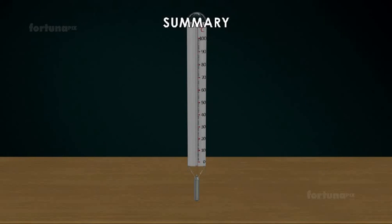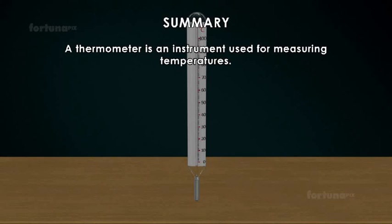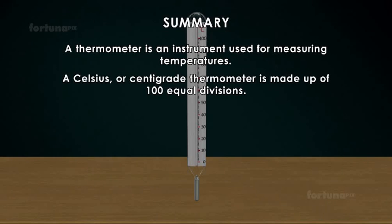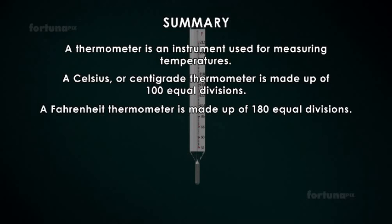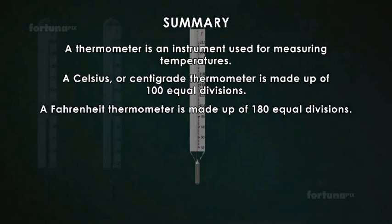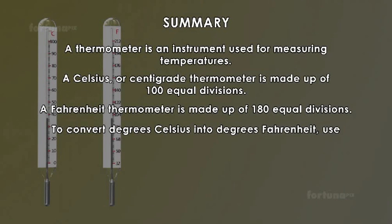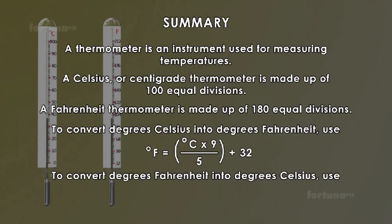Summary. A thermometer is an instrument used for measuring temperatures. A Celsius or Centigrade thermometer is made up of 100 equal divisions. A Fahrenheit thermometer is made up of 180 equal divisions. To convert degrees Celsius into degrees Fahrenheit use F is equal to C multiplied by 9 divided by 5 plus 32. To convert degrees Fahrenheit into degrees Celsius use C is equal to F minus 32 whole multiplied by 5 divided by 9.